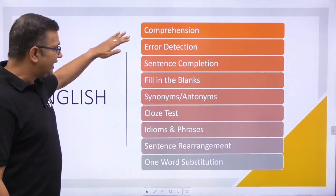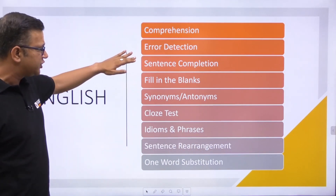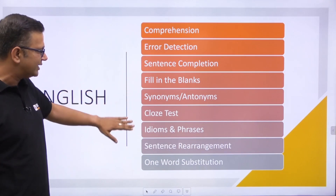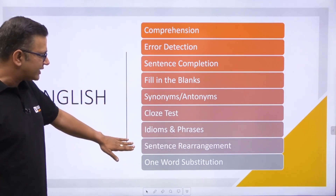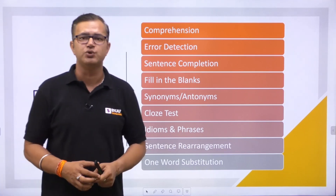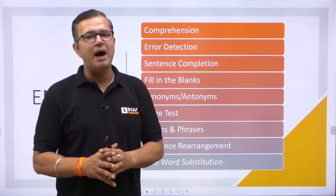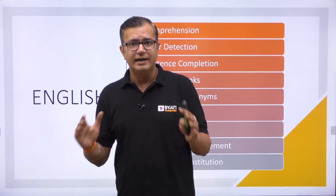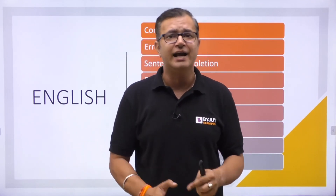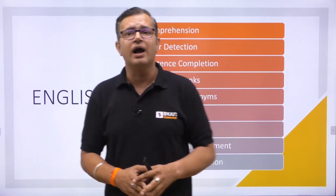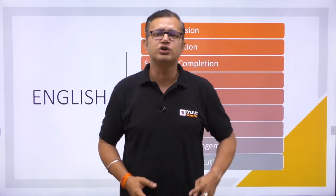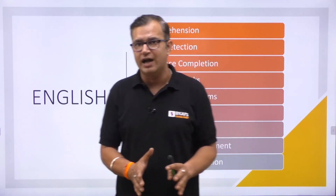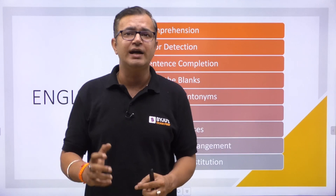For the English section, you need to prepare the following topics: comprehension, error detection, sentence completion, fill in the blanks, synonyms and antonyms, cloze test, idioms and phrases, sentence rearrangement, and one-word substitution. There is no exact fixed count, but based on previous years, around 30 questions are asked in English. So English is a very important section.